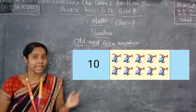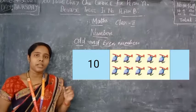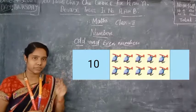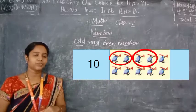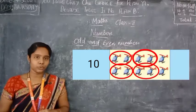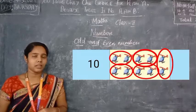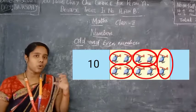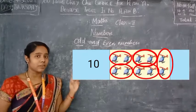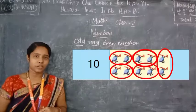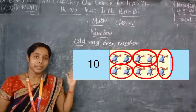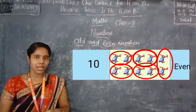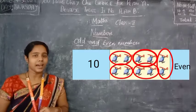We have ten helicopters here. Now we will pair two helicopters to make a set of two. First set — two. Second set — two. Third — two. Fourth — two. Fifth — two. Do we have any remaining? No remaining helicopters while making the sets of twos. We were able to make five sets of twos. So the number ten is an even number, because we can make complete sets of twos without any remaining.